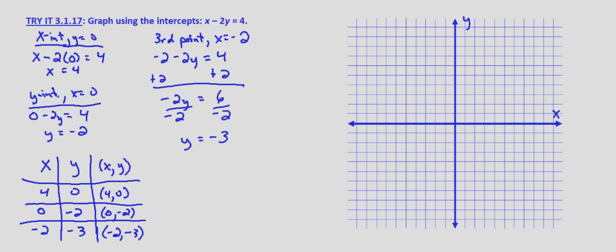So now we plot our three points. 4, 0 for the x-intercept. So 1, 2, 3, 4, 0. 0, negative 2 for the y-intercept. And negative 2, negative 3, negative 1, negative 2, negative 3 for our third point. And there we have the graph of x minus 2y equals 4.